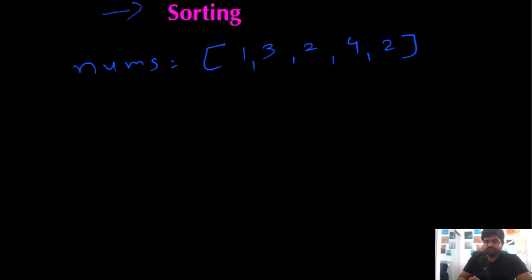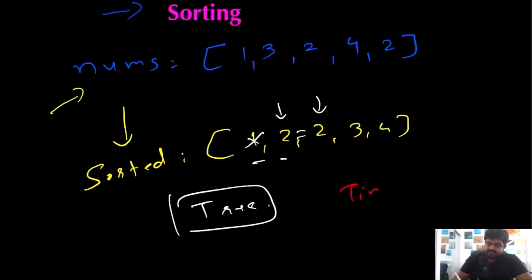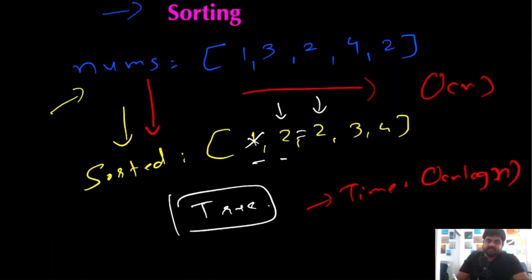One way to improve is by sorting. After sorting the input, all we need to do is compare adjacent values. If we see two adjacent values that are the same, we return true immediately. Time complexity with sorting is O(n log n). This is a big improvement over O(n²) brute force. But can we do even better with an optimal solution?